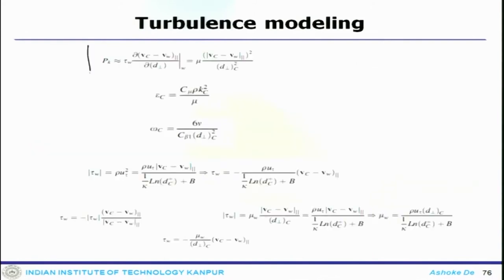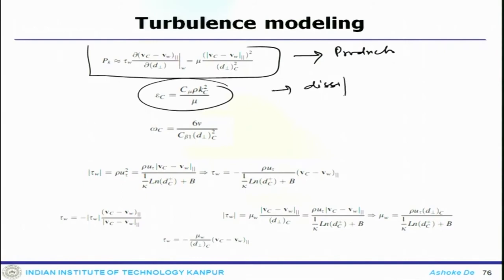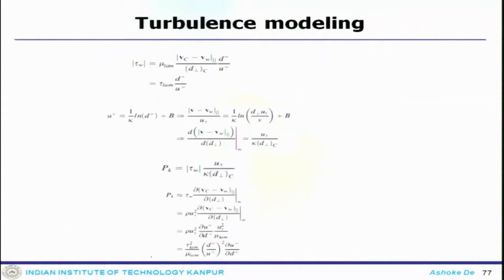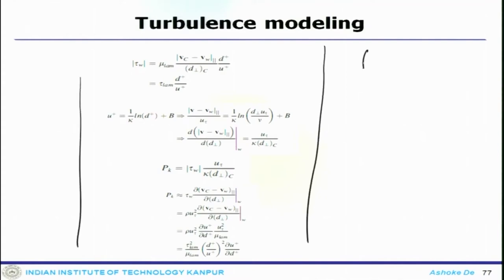At a boundary element close to the wall, the normal distance d_c+ = d_c * u_tau / nu and kinetic energy are calculated. As long as d_c perpendicular is less than the limiting y+, the point lies in the viscous sublayer; otherwise it is in the inertial sublayer. The turbulence production term, dissipation term, turbulent frequency, and wall shear stress can all be estimated at that cell.